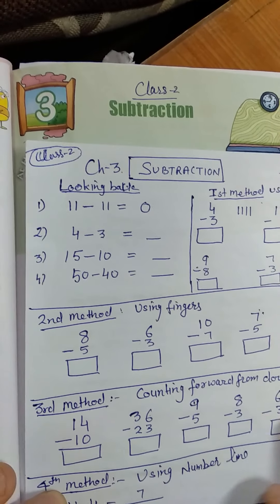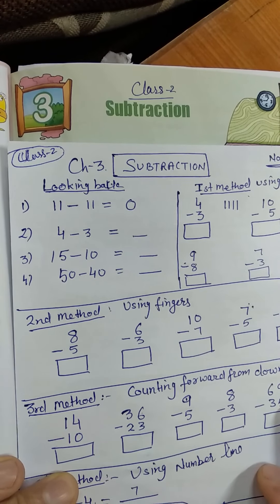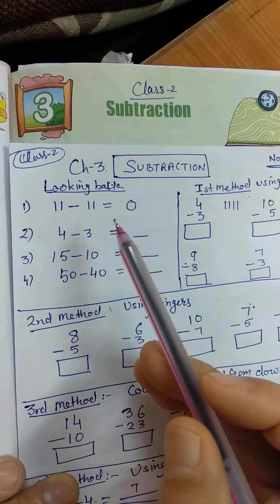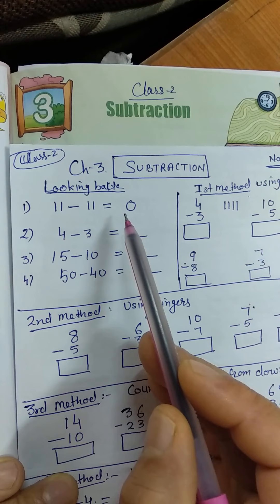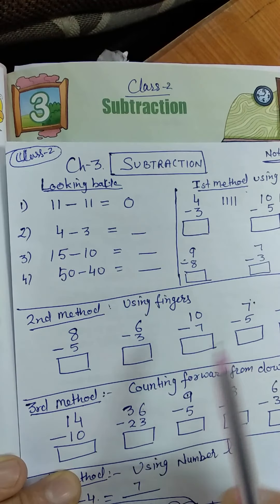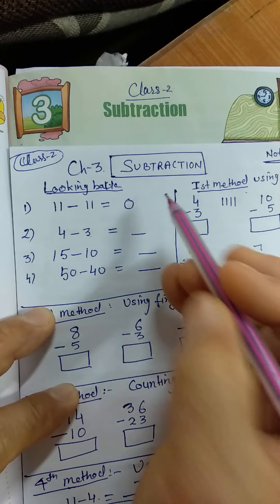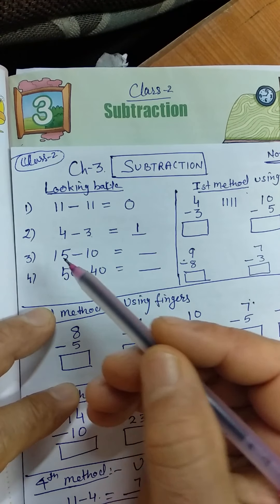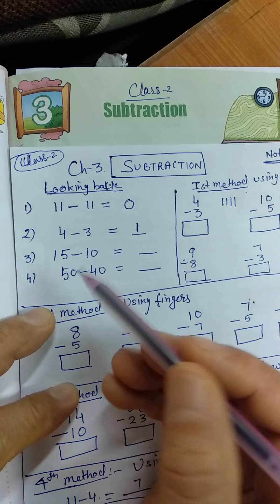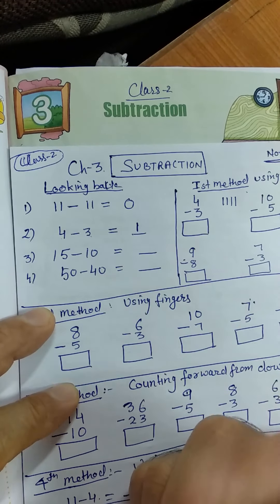Class 2, today we are going to start Chapter 3. The name of the chapter is subtraction. Looking back at class 1, you did small subtraction: if we subtract the same number the answer will be 0, like 11 minus 11 is 0, or 4 minus 4 is 0. If we subtract the previous number, like 4 minus 3, the answer will be 1. So 10 minus 9 is 1, 100 minus 99 is 1. If you subtract the previous number the answer is always 1, and if you subtract the same number the answer is always 0.